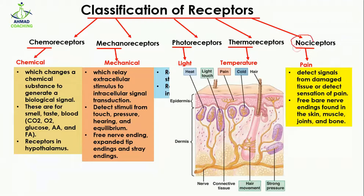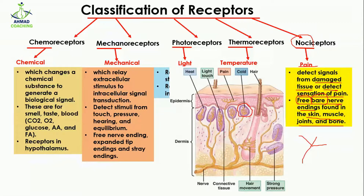The last receptor type is nociceptors. 'Noci' means pain. Nociceptors are free bare nerve endings found in the skin, muscles, joints, and bones. 'Free' means they are free nerve endings, and 'bare' means they are not encapsulated. Unlike other receptors that have capsules, pain receptors have no encapsulation. They are present in the epidermis, so even a small cut in your skin can be easily detected.